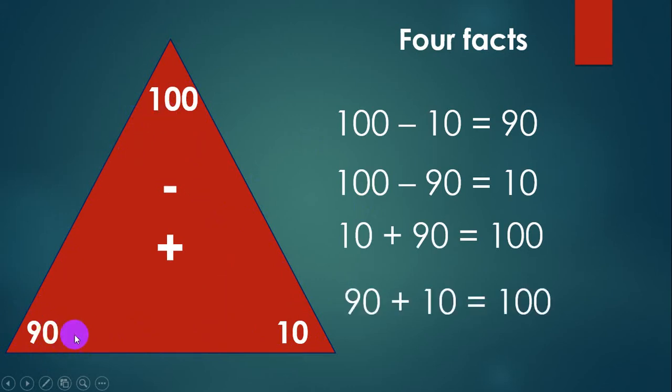And the last one is 90 plus 10 is equal to 100. I hope you understand this and you are doing a great job while attempting the perfect family triangles. See you in the next video. Take care and Allah Hafiz.